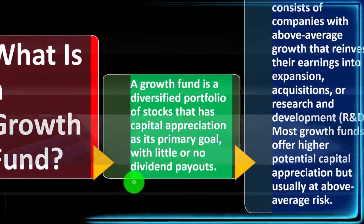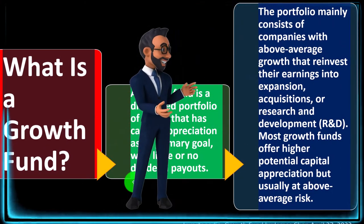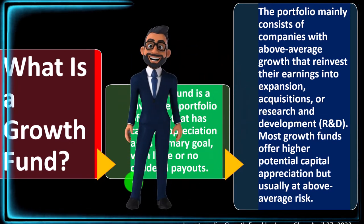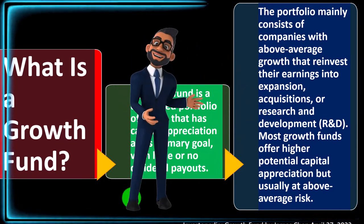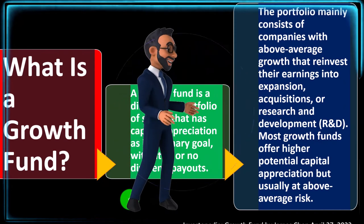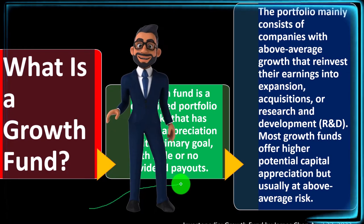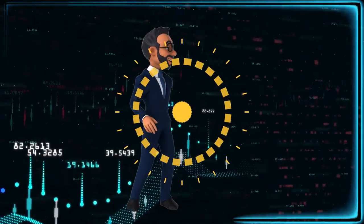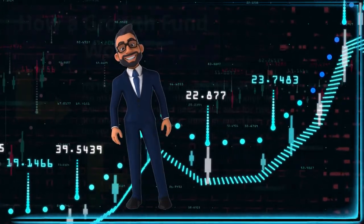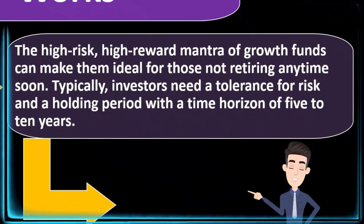The portfolio mainly consists of companies with above-average growth that reinvest their earnings into expansion, acquisition, or research and development. Most growth funds offer higher potential capital appreciation but usually at above-average risk. More established companies march along steadily, while growth stocks have the potential for explosive growth but carry more risk.